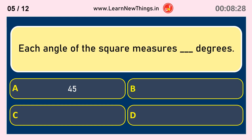Each angle of the square measures how many degrees? Ninety degrees.